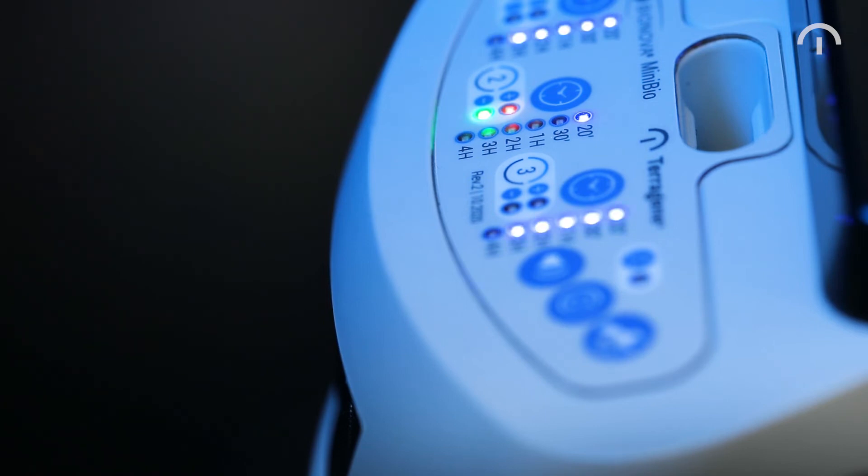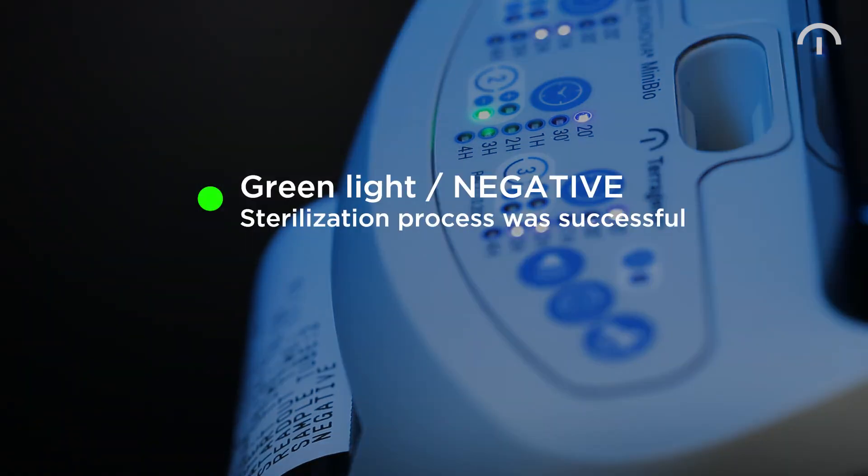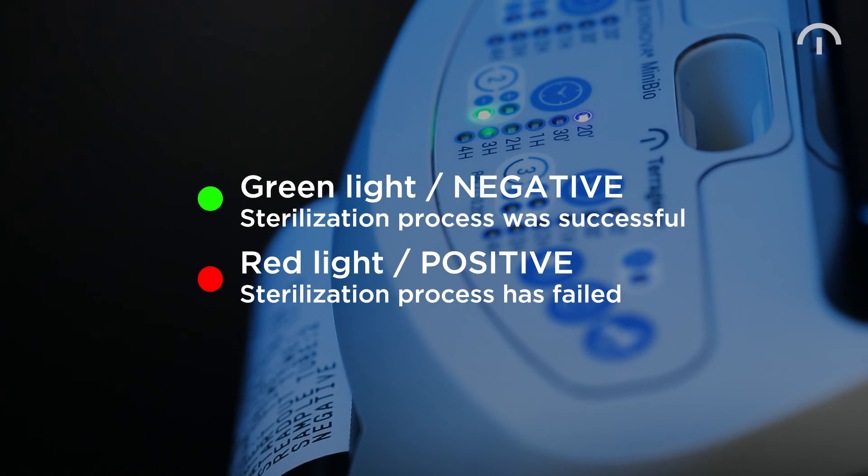When the readout process is done, the MiniBio will print the results and display a red or green light. A green light means the sterilization process was successful, while a red light indicates that the sterilization process failed.